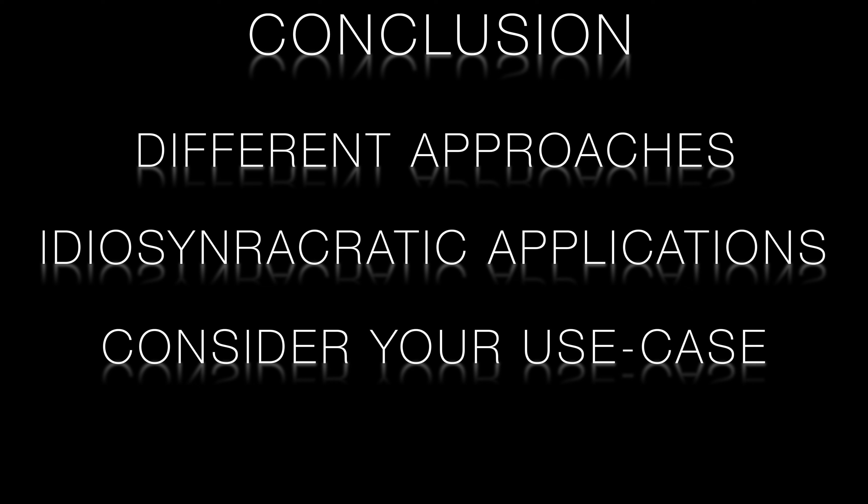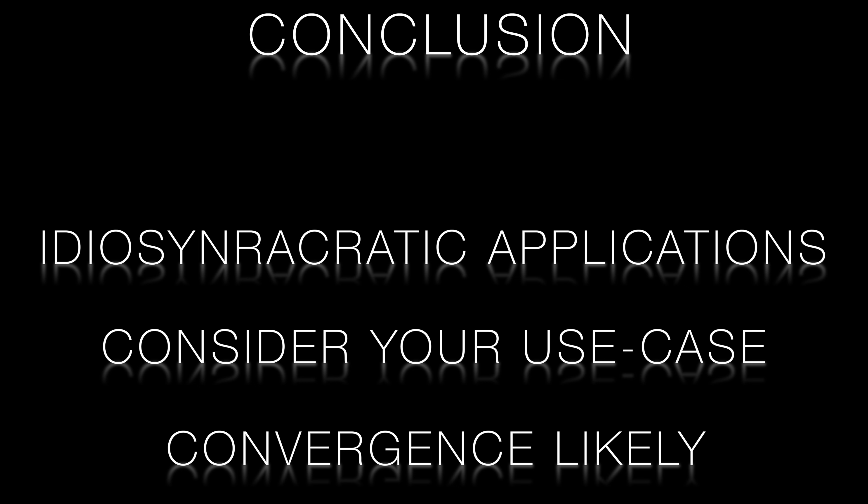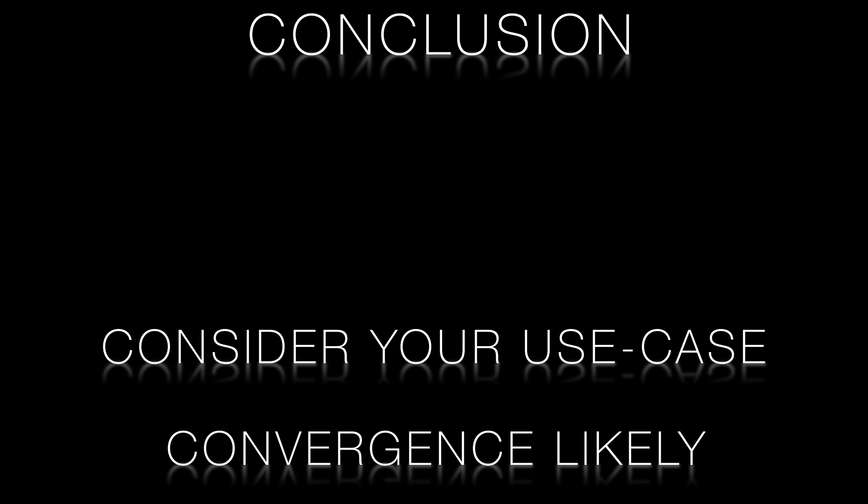In summary, Auto-GPT and Hugging-GPT each have their own unique strengths and weaknesses, making them better suited to different tasks. When choosing a model, it's essential to consider your specific use case and the factors we discussed in this video. As these models continue to evolve, we expect to see a convergence of their approaches, leading to even more powerful, useful, and versatile AI language models in the future. Stay informed about the latest developments in AI and keep exploring to find the best solutions for your unique challenges.